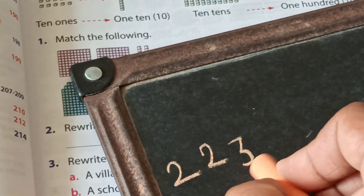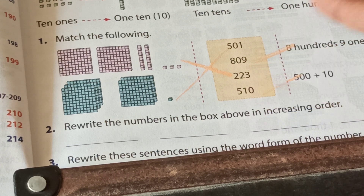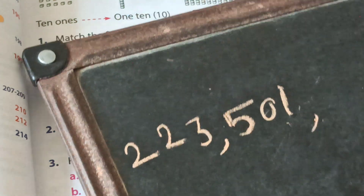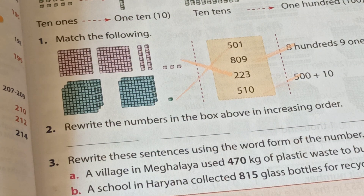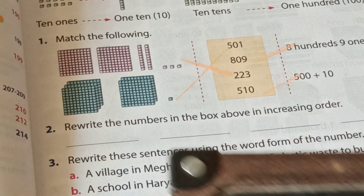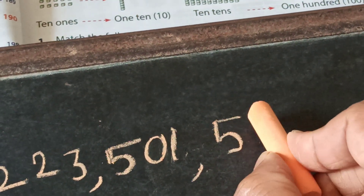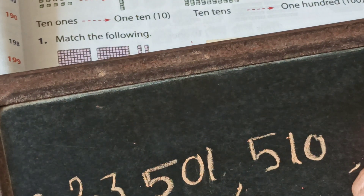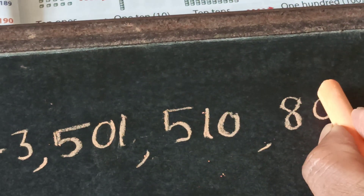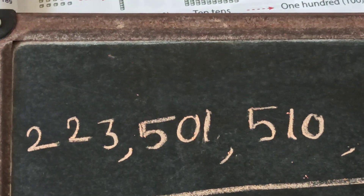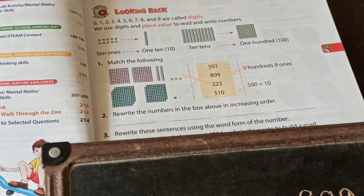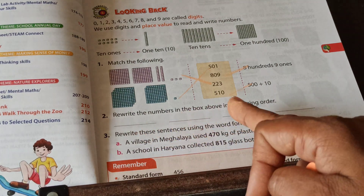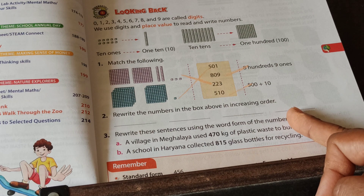223 is first. Then 300 is not there, 400 is not there, so 501 is next. Then 510. And last one is 809. So the increasing order is: 223, 501, 510, 809.